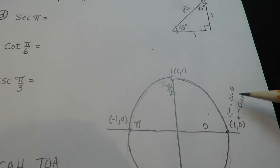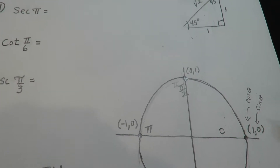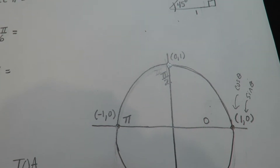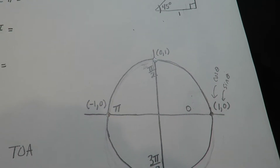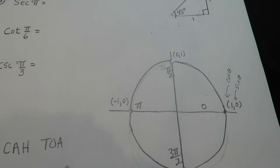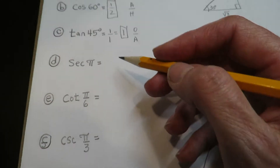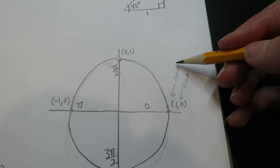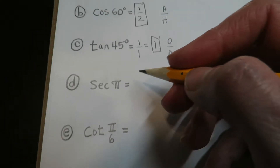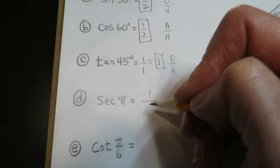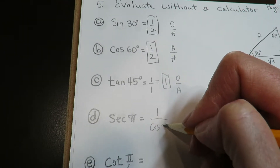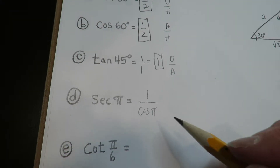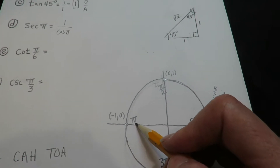Anytime you get a trig function that is not cosine or sine, you want to convert it to use cosine or sine — or both, depending on what it is. Like if you have a tangent function, you're going to have to use sine and cosine on the unit circle. So I have to convert the secant because I don't have a secant on the circle — I have cosine or sine. We're going to use the reciprocal identity: one over cosine of pi.